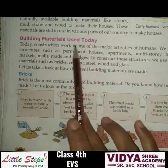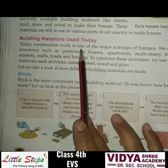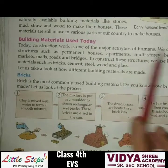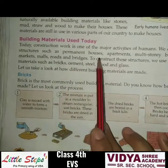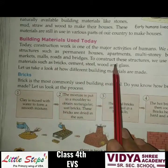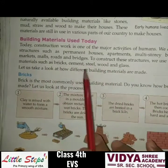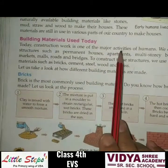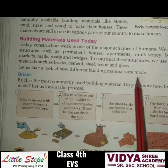Building materials used today: now we will read about the building materials which are used today. Construction work is one of the major activities of humans. We construct structures such as permanent houses, apartments, multi-story buildings, markets, malls, roads, and bridges. To construct these structures, we use building materials such as bricks, cement, steel, wood, and glass.